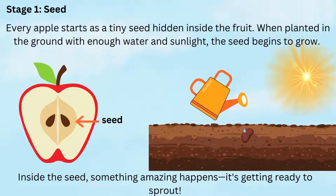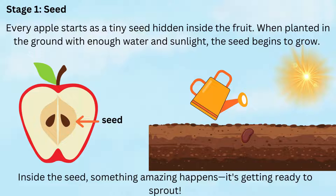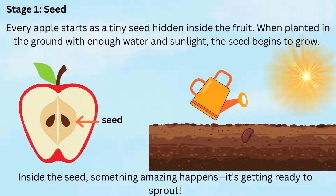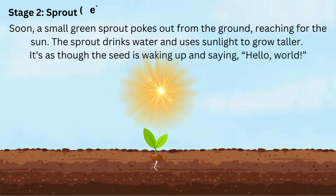Stage 1: Seed. Every apple starts as a tiny seed hidden inside the fruit. When planted in the ground with enough water and sunlight, the seed begins to grow. Inside the seed something amazing happens — it's getting ready to sprout!